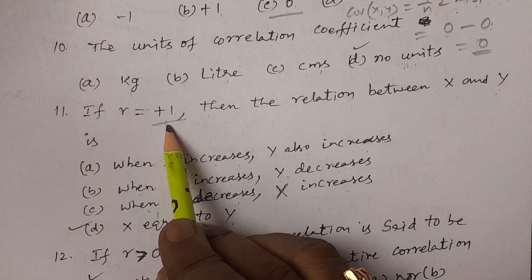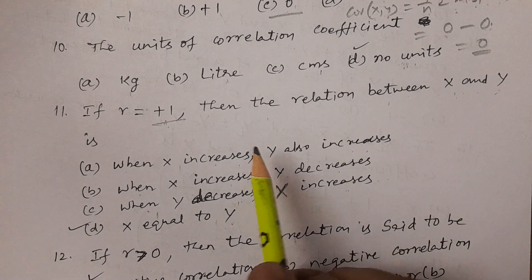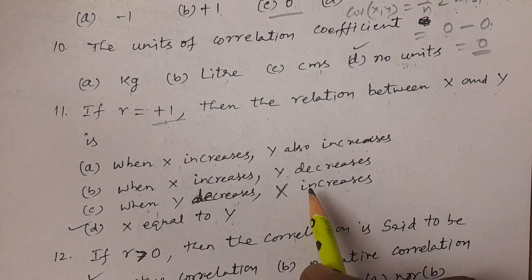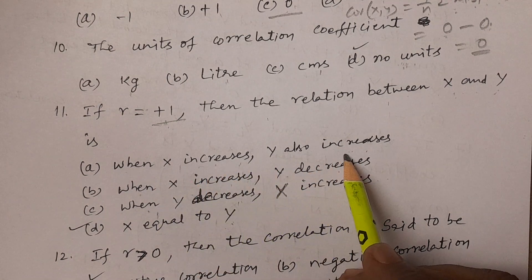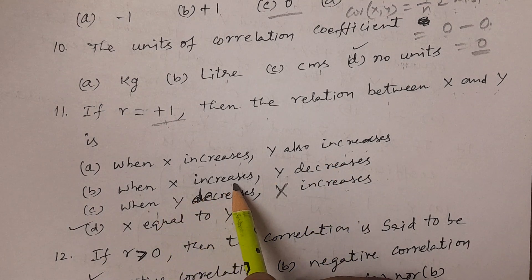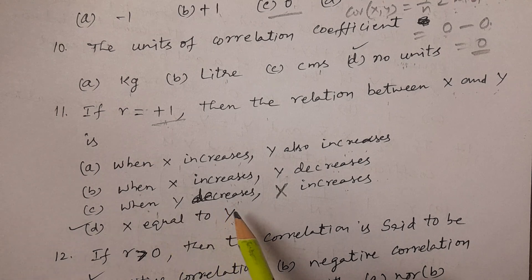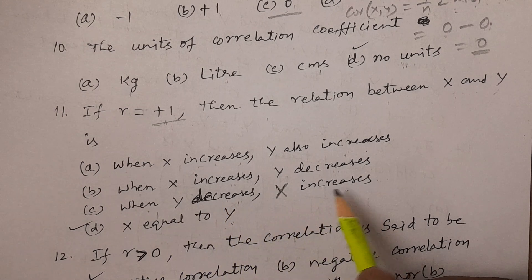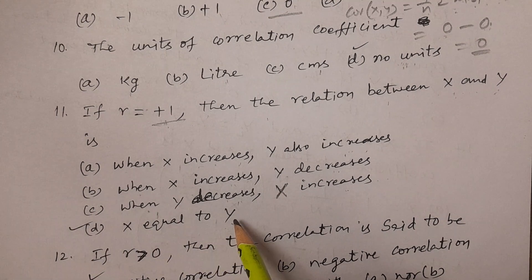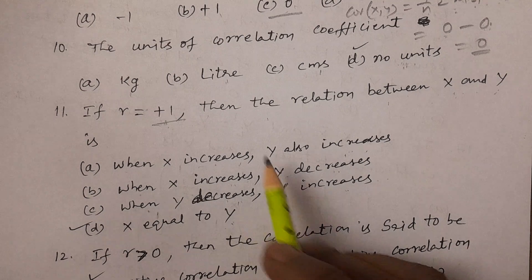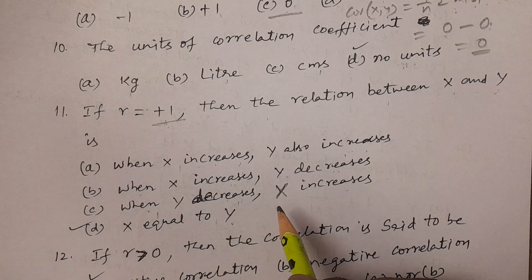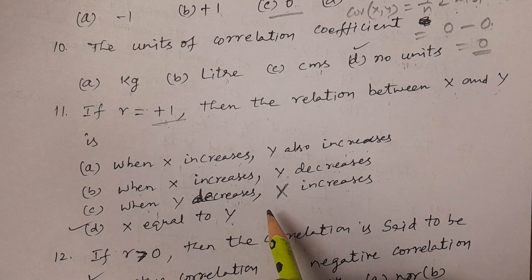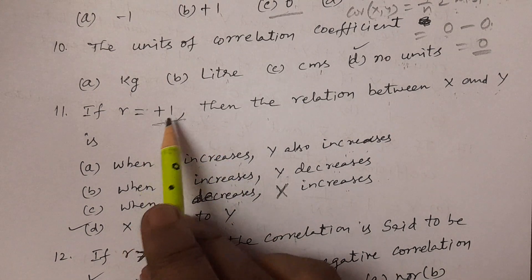In Telugu: if R equals plus one, what is the relation between X and Y? R equals plus one occurs when X equals plus Y. R equals minus one occurs when X equals minus Y, or X plus Y equals zero. So X equal to Y gives R equal to plus one. That is the answer, option D.